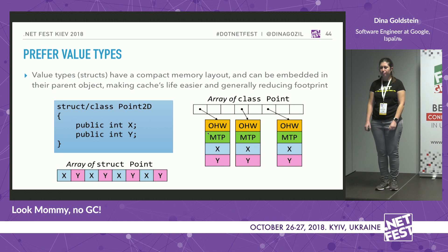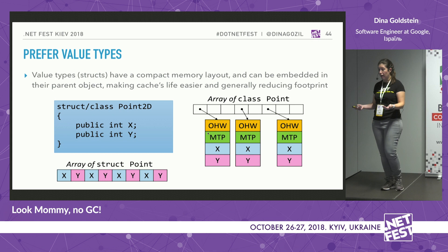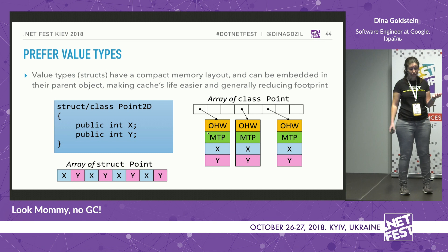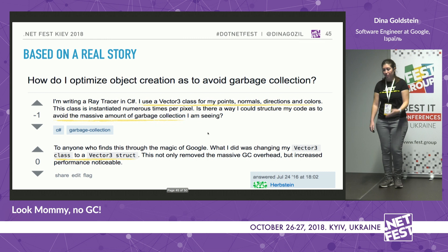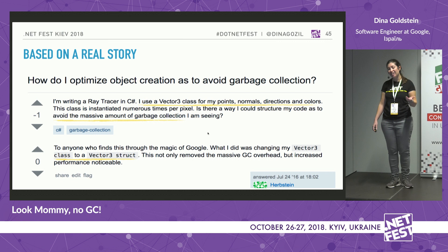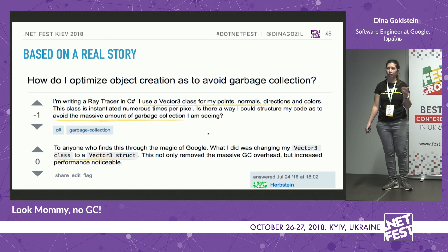Prefer value types — not always, but when it makes sense for your application. We already saw the boxing example. Value types are much more compact in memory, consume less memory, are better for caching, and array operations on value types work much faster. For example, if you're writing an image processing application, your point data structure should probably be a value type. From real life: someone was writing a ray tracer in C# — very heavy on arrays of vectors — and was having severe problems that all went away once they turned their vector into a struct.